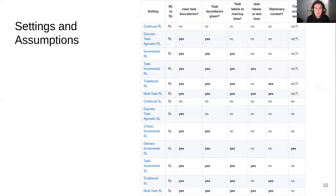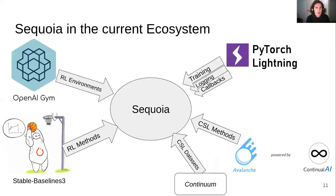Here's a list of the different settings and assumptions that Sequoia currently supports. As you can see, we're able to recover a great many settings by just having a few simple questions. Here's how Sequoia fits in the current software ecosystem. Sequoia is a hub where we use different frameworks that are specialized to do different things. Sequoia's only real purpose is to create this organization of research problems, and then different frameworks are used to provide solutions to these problems.